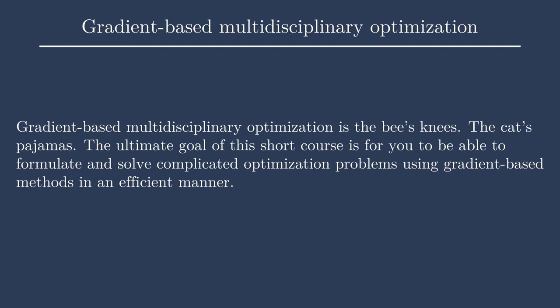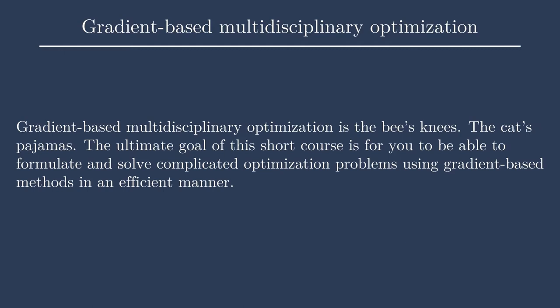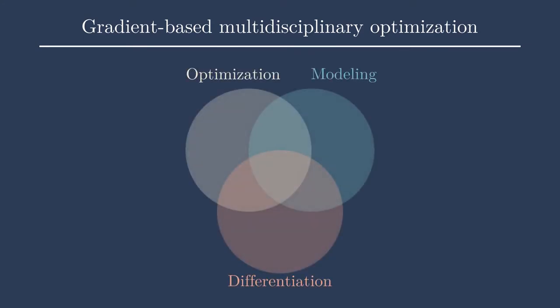The entire goal of this short course is to motivate and teach you how to do gradient-based design optimization. The main reason is that gradient-based design optimization is our only hope for highly dimensional, complex, multidisciplinary problems. These problems often crop up in aerospace, wind energy, automotive design, satellite design, and so many other performance-driven applications. This deals with all three main topics of this course: optimization, modeling, and differentiation.